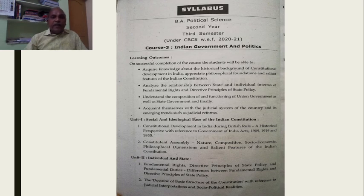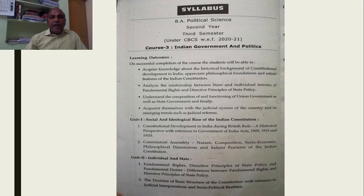Every unit consists of 2 subheadings. In the first subheading of Unit 1: Constitutional Development in India during British rule — a historical perspective with reference to the Government of India Acts of 1909, 1919, and 1935.